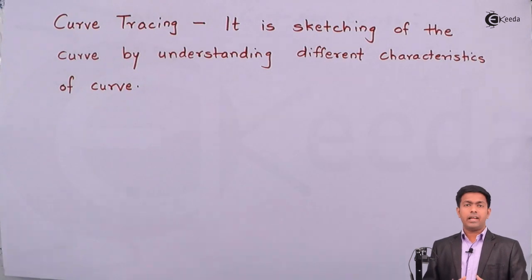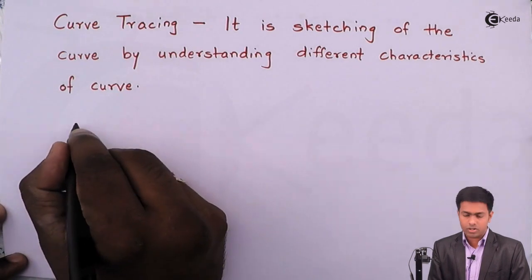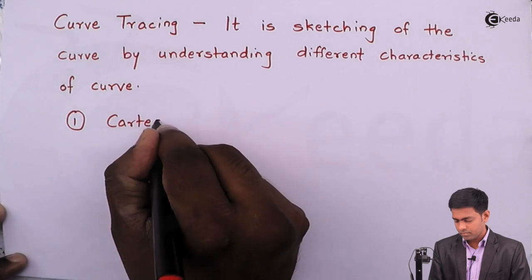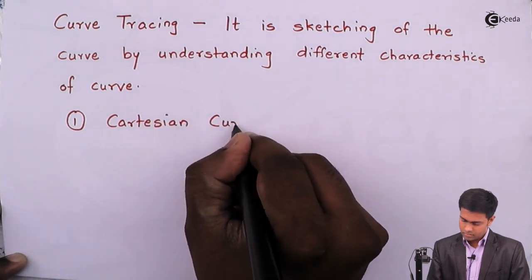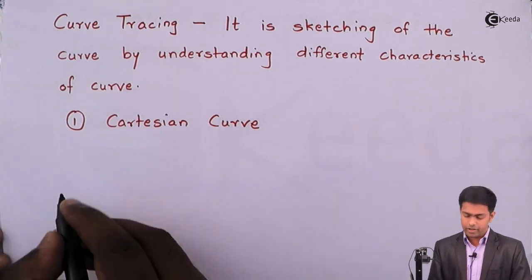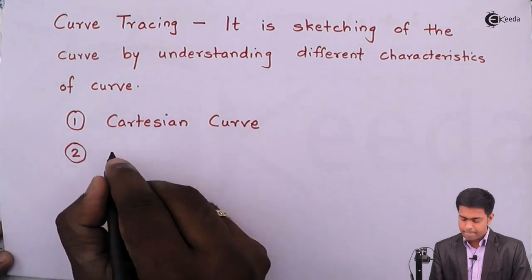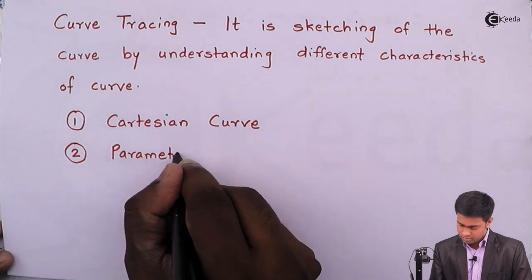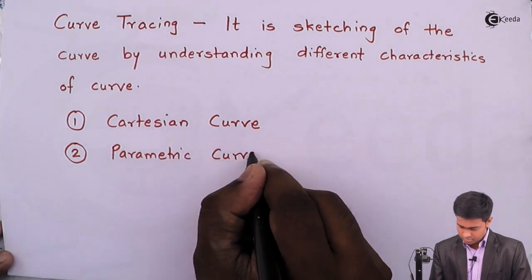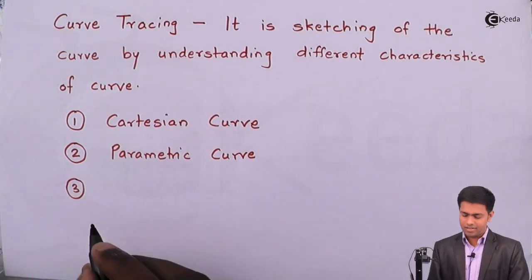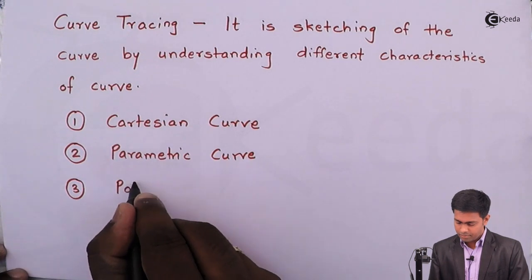There are three types of curves. The first is the Cartesian curve. The second type is parametric curves. And the last type is polar curves.